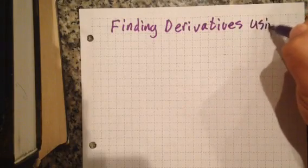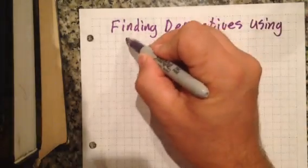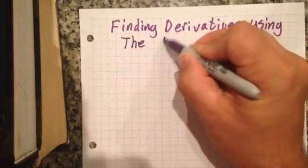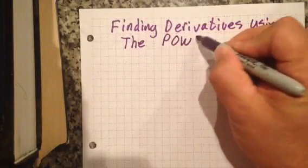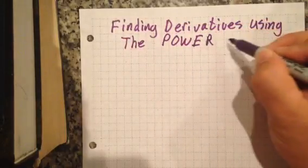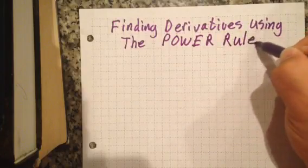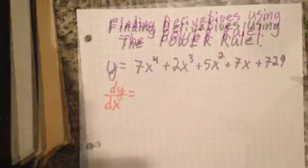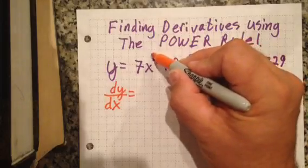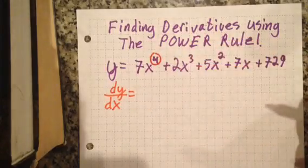Okay, let's find some derivatives using something called the power rule. It's kind of simple and a lot better than using the difference quotient, especially when you're trying to find the derivative of something big like this. Take that power 4 and you multiply it by the leading coefficient 7.